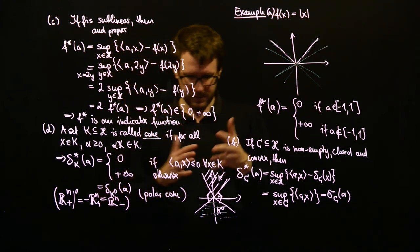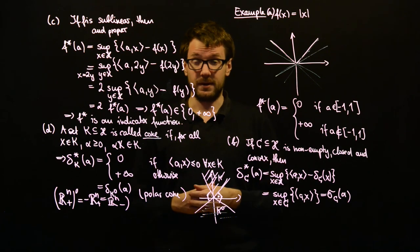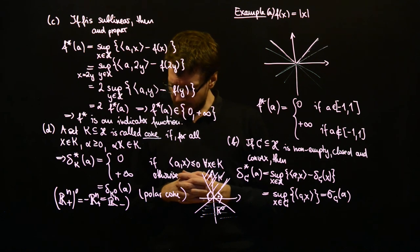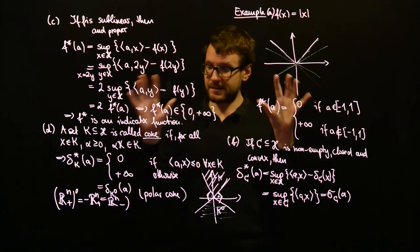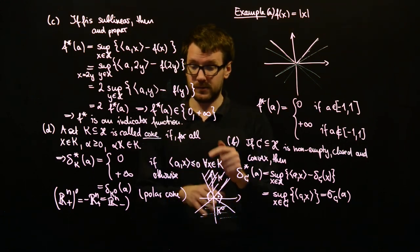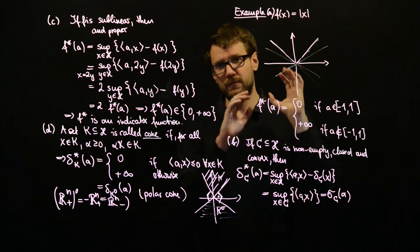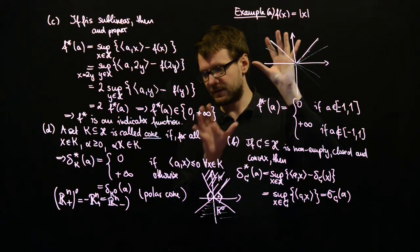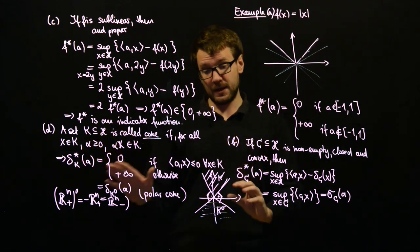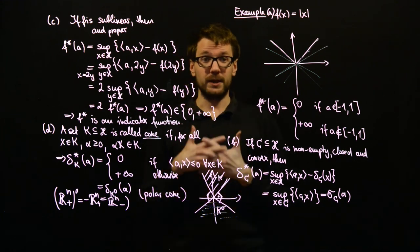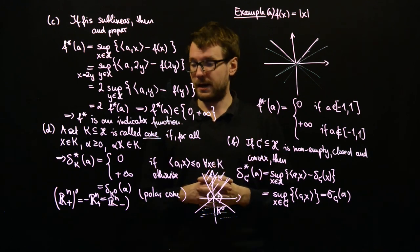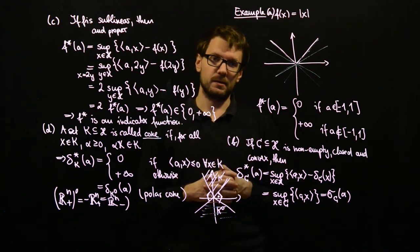We have discussed some examples here. Particularly interesting is the duality between convex functions: if you restrict yourself to indicator functions of cones, you get the duality between convex closed cones. The next step will be to use these conjugate functions for the duality between optimization problems.